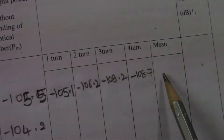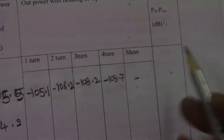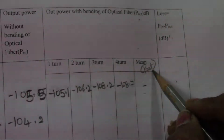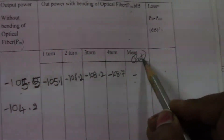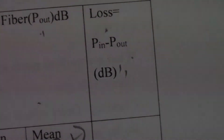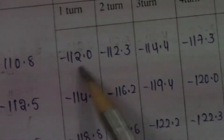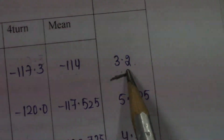After taking all these readings, calculate the average: add all four values and divide by four to get the mean reading. This mean value is your P_out — the output power of the optical fiber with bending. Now substitute P_in and P_out in the loss formula: Loss equals P_in minus P_out. With my input power of minus 110.8, the difference gives the loss value. The minus sign here represents the loss sign representation.